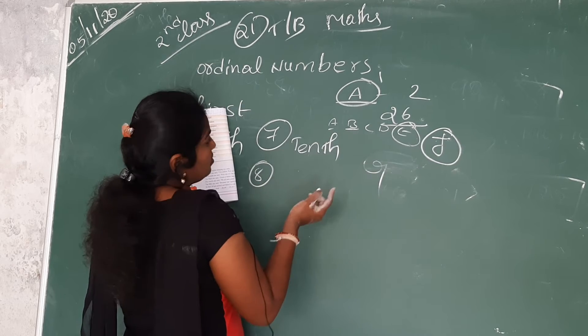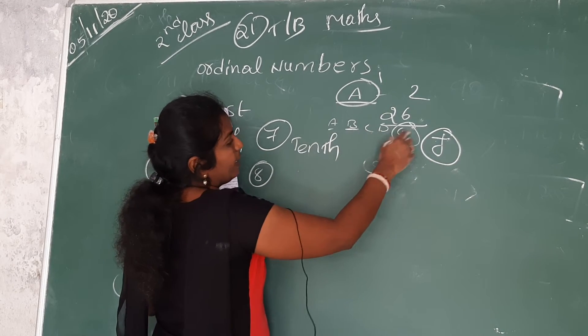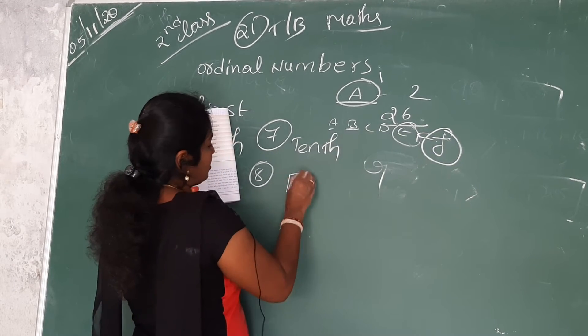Eighth one. Dash is the sixth letter. A B C D E F. F is the sixth letter.